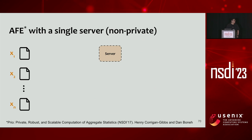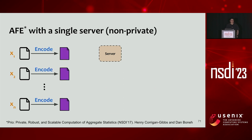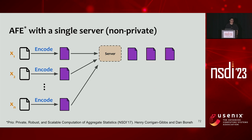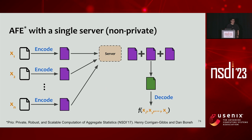I'll first describe the AFE scheme with a single server, which doesn't yet provide privacy, then show how it extends to multiple servers. The client encodes its input into an encoding value, and all encoding values are forwarded to the server in clear. The server adds up all encoding values to obtain the sum of encodings, then runs a decode function to obtain the statistical result.